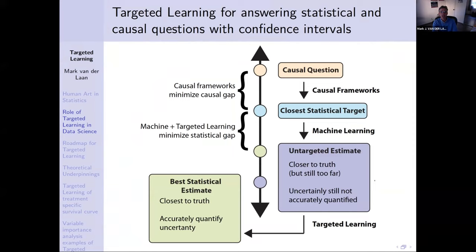A sensible roadmap for statistical learning is laid out here. You define your interest in some kind of causal question, and for that we nowadays have causal models — the Neyman-Rubin model, the structural equation model, Pearl, and so on.